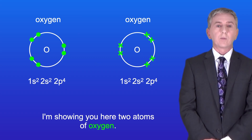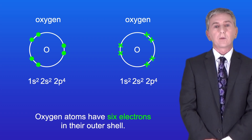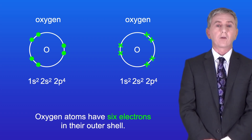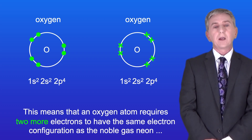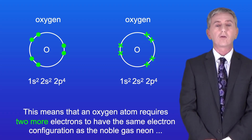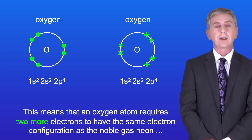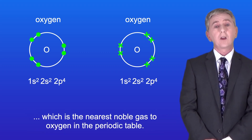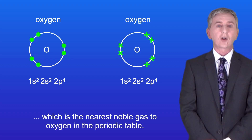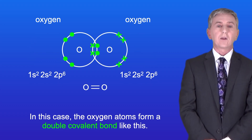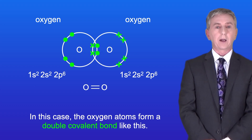Here are two atoms of oxygen. Oxygen atoms have six electrons in the outer shell. This means that an oxygen atom requires two more electrons to have the same electron configuration as the noble gas neon, which is the nearest noble gas to oxygen in the periodic table. So in this case the oxygen atoms form a double covalent bond.